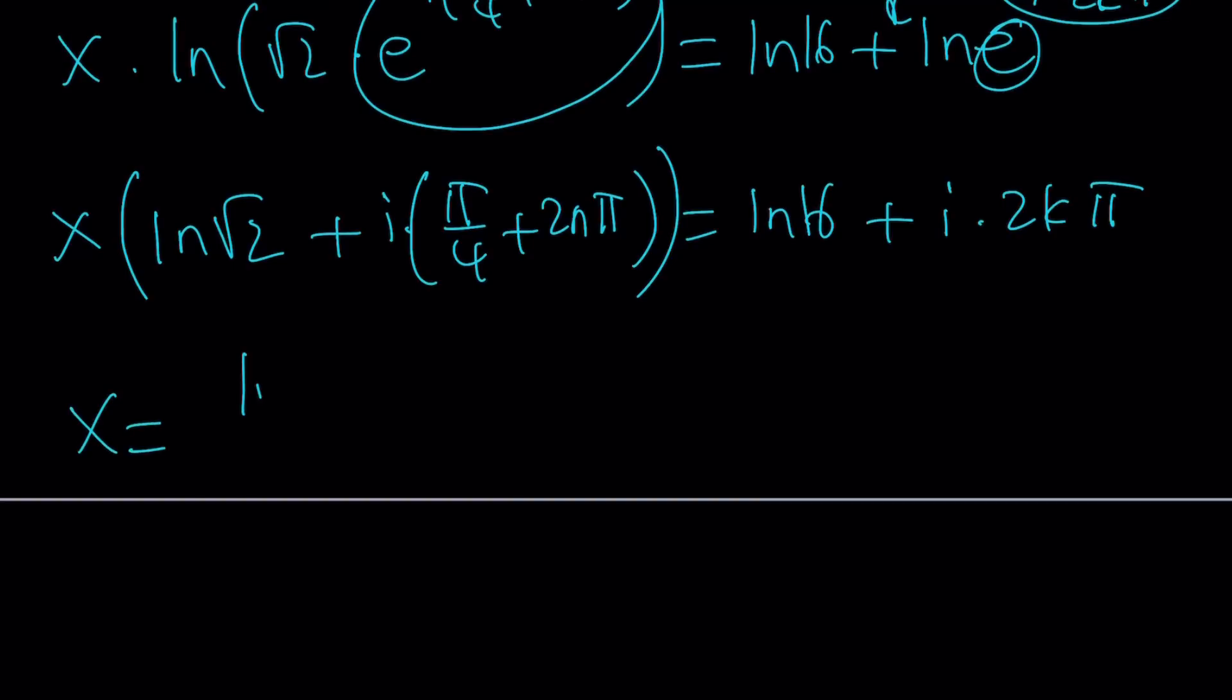X is going to be what? (ln 16 + i·2kπ) divided by ln√2. And by the way, I can write it as 1/2. This should be the value of X.